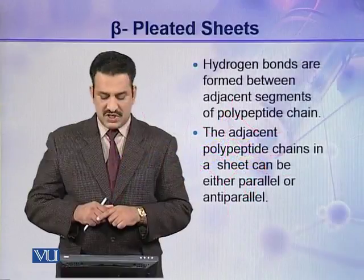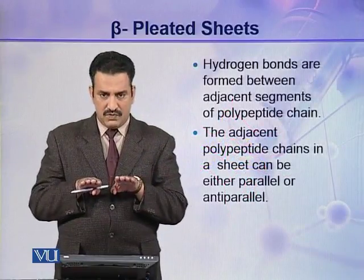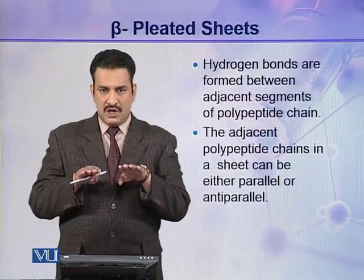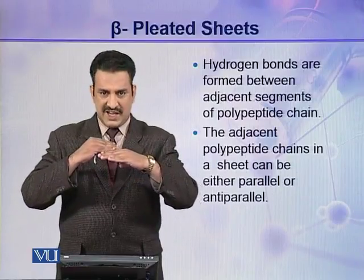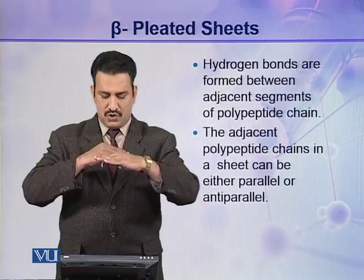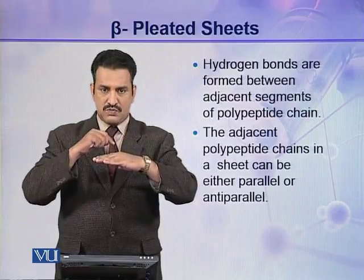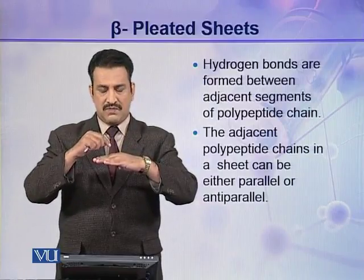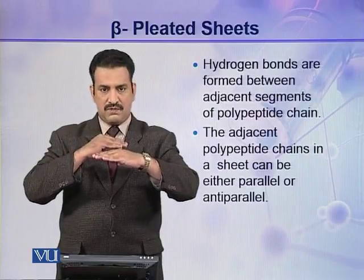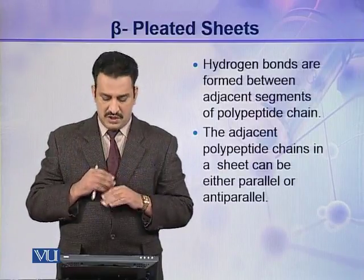Hydrogen bonds are formed between adjacent segments of polypeptide chains. When two zigzag polypeptide chains come close to each other, hydrogen bonds are formed between different segments of these two polypeptide chains.